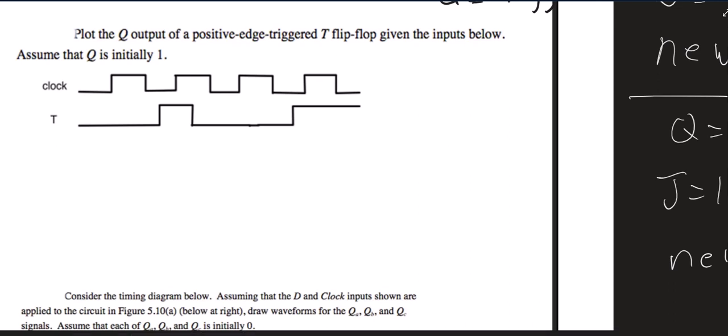Okay, so for this one we're going to plot the Q output of a positive edge triggered T flip-flop given the inputs below. So now we're going to practice what we just talked about.